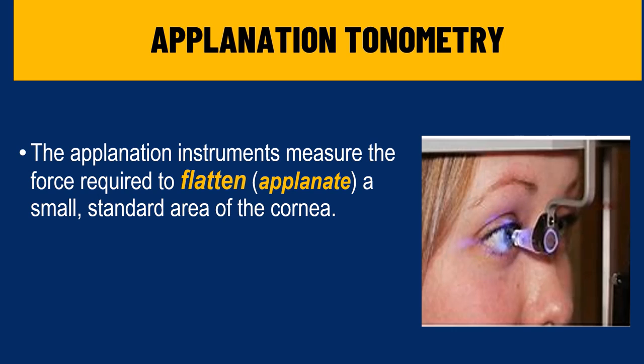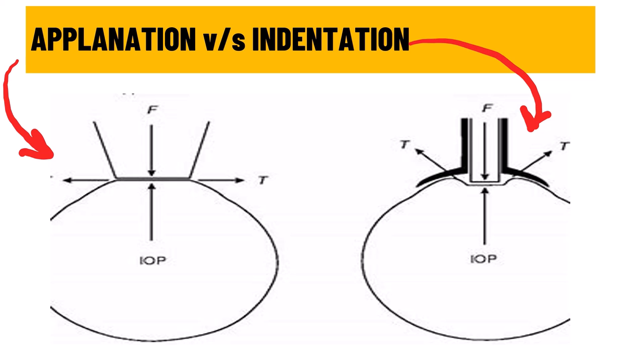The applanation tonometer basically measures the force required to flatten a small standard area on the cornea. The term applanation means creating a flattening effect on the cornea using some amount of force. In indentation, as the name suggests, we were creating a dent or depression inside the cornea using a specific force of the tonometer, specifically the Schiotz tonometer, and based on the force applied we were calculating the intraocular pressure.